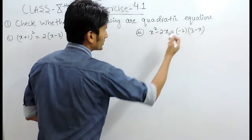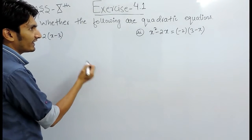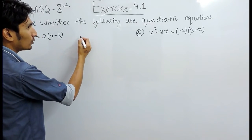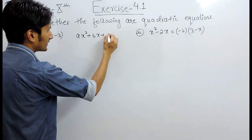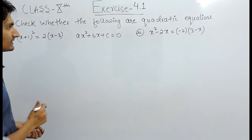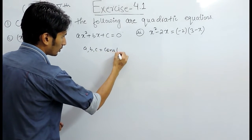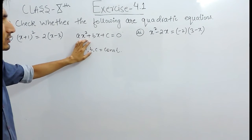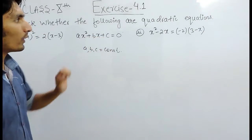A quadratic equation is basically an equation having a maximum degree of 2, meaning the power of its variable must be equal to 2, or you can say the greatest power. A standard quadratic equation is in the form ax squared plus bx plus c equals 0, where x is the variable and a, b, c are constants. This equation is quadratic because the maximum power of its variable is 2.